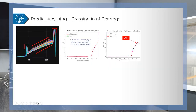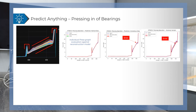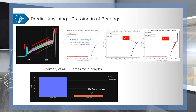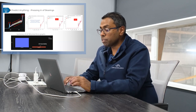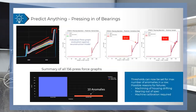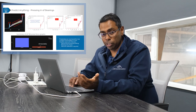A slight deviation at the end of the chart between the red and blue curves, and an even bigger error in another case, illustrates how the area between the two charts determines the error between ideal and actual press force. We offer our customer the ability to count anomalies within a given press set — for example, no more than 10 anomalies out of 156 parts, or any three anomalies in a row triggers a flag and stops the process. This has proven extremely valuable for detecting machining housing issues, bearings out of spec, or whether the machine needs calibration.